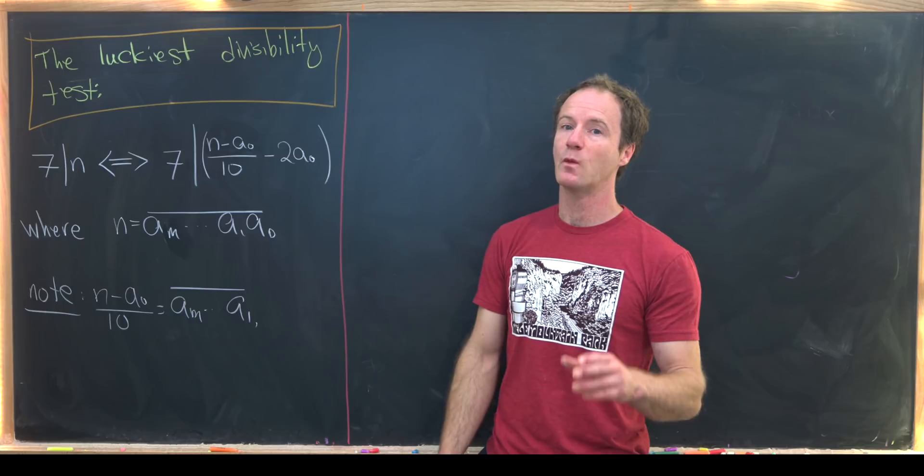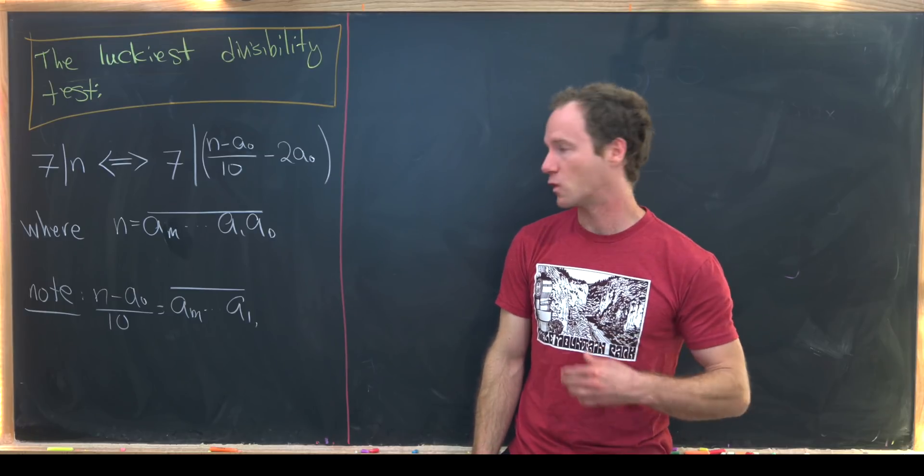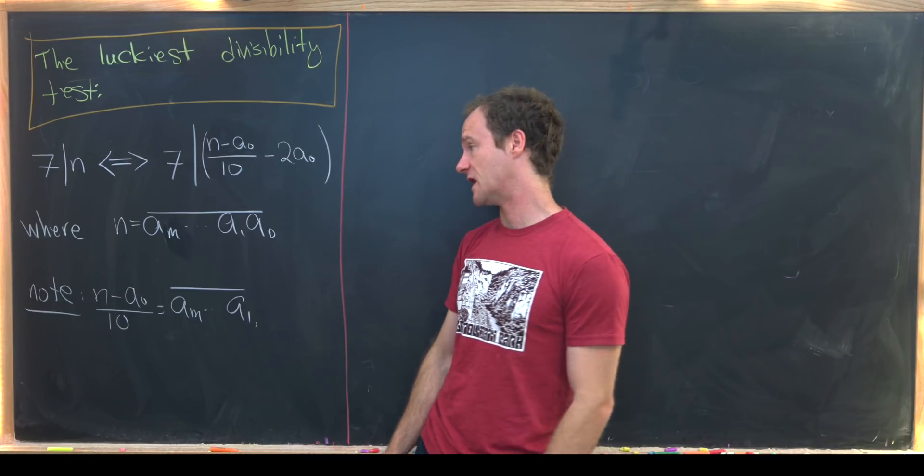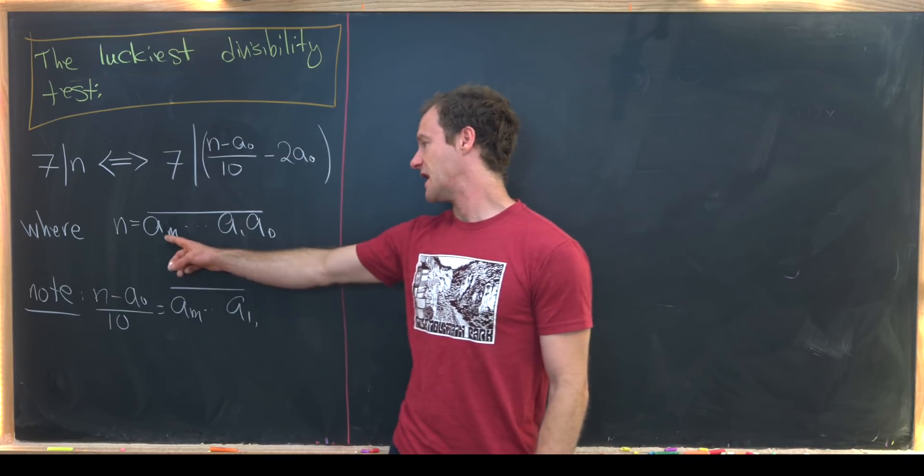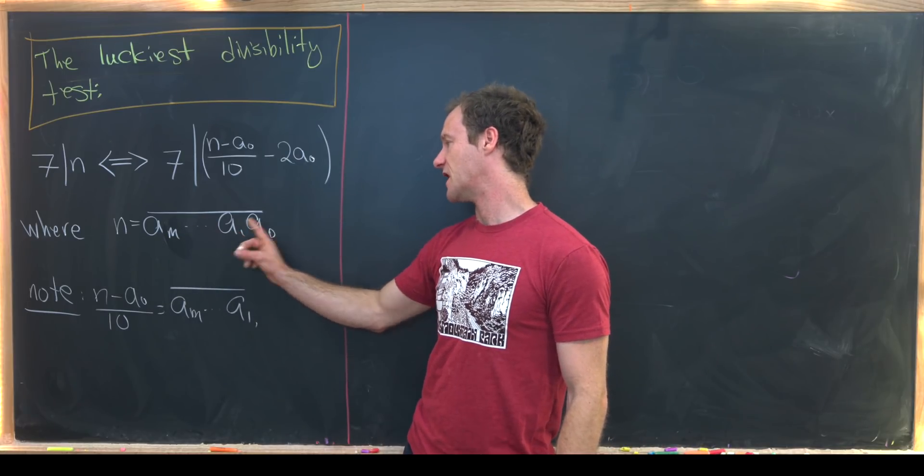You might say well what's a naught? Well it is the ones digit or the units digit of n. So in other words if we write n via its digits as a_m a_{m-1} down to a_1 a_0.